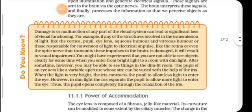You might have experienced that you are not able to see objects clearly for some time when you enter from bright light into a room with dim light. After some time, you may be able to see things in the dim light room. The pupil of an eye acts like a variable aperture whose size can be varied with the help of the iris. When the light is very bright, the iris contracts the pupil to allow less light to enter the eye. In dim light, the iris expands the pupil to allow more light to enter the eye, and the pupil opens completely through the relaxation of the iris.